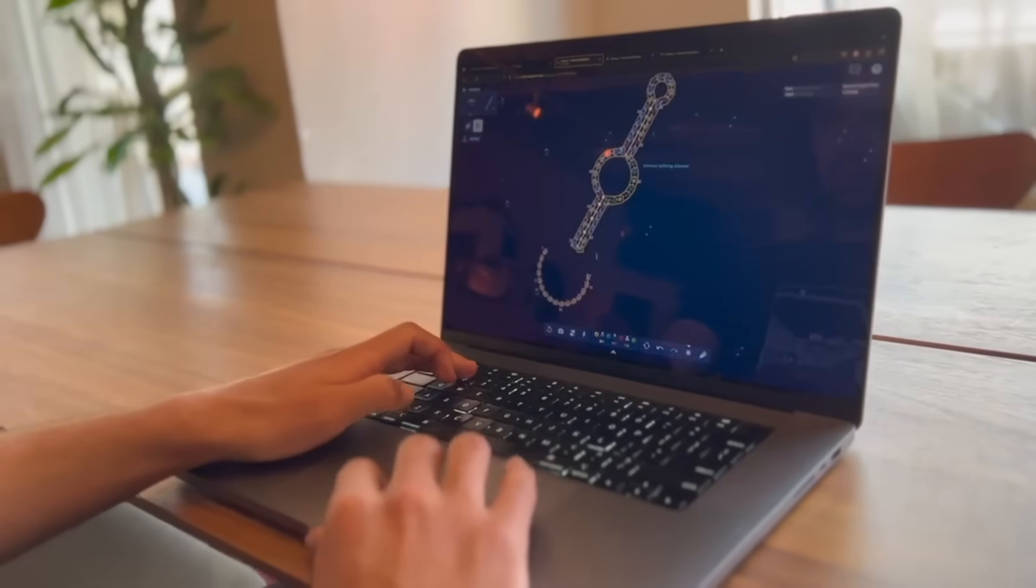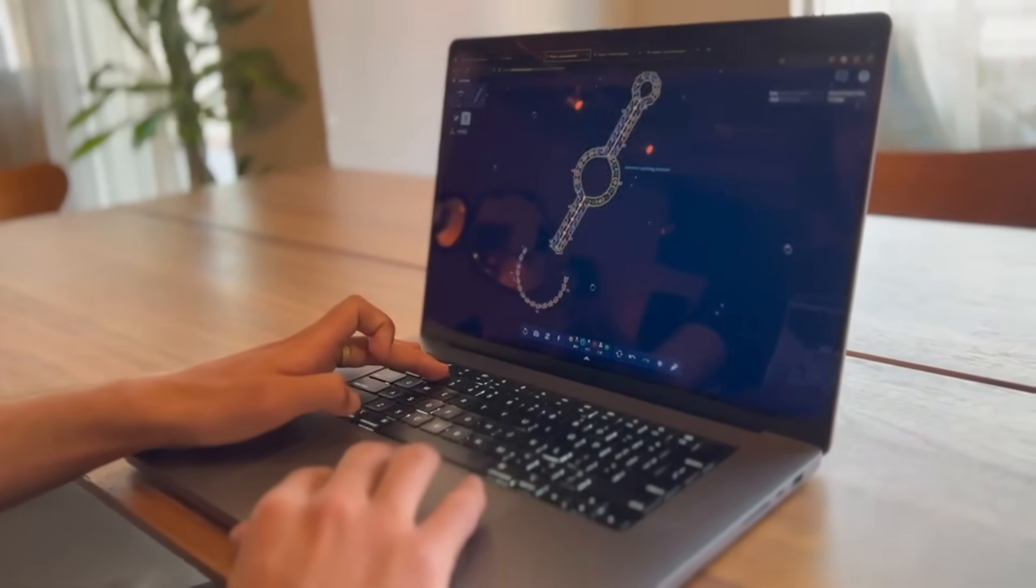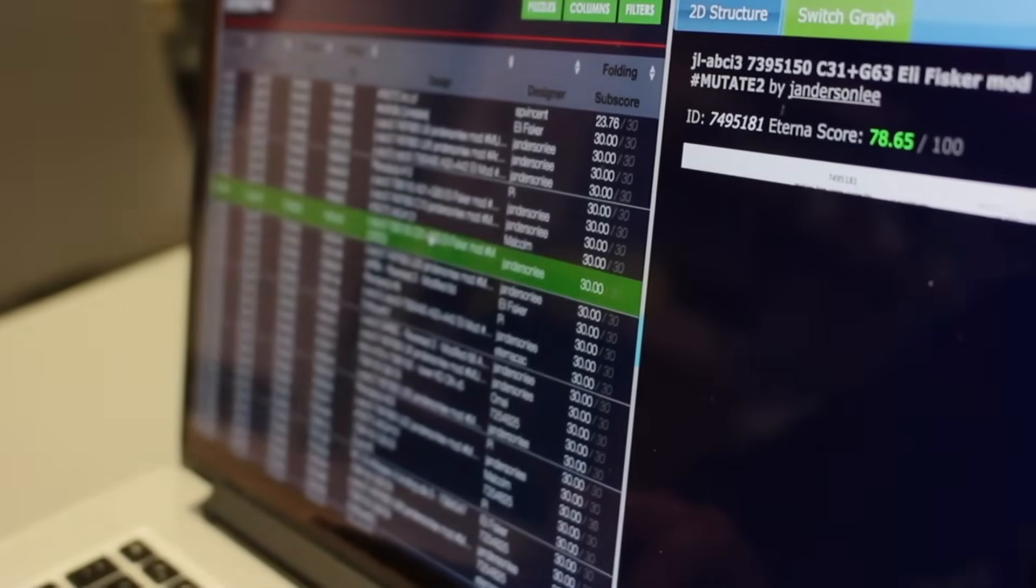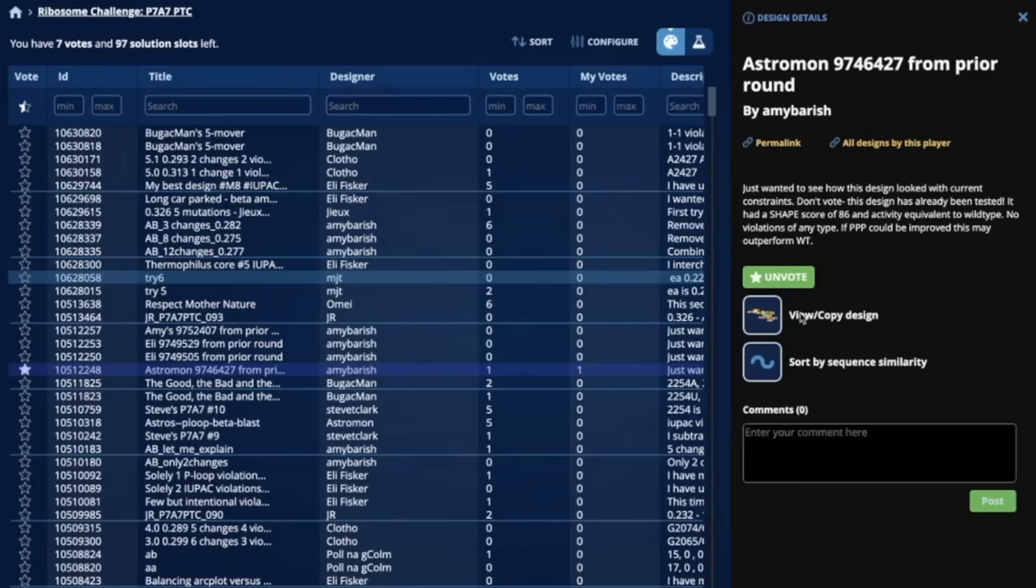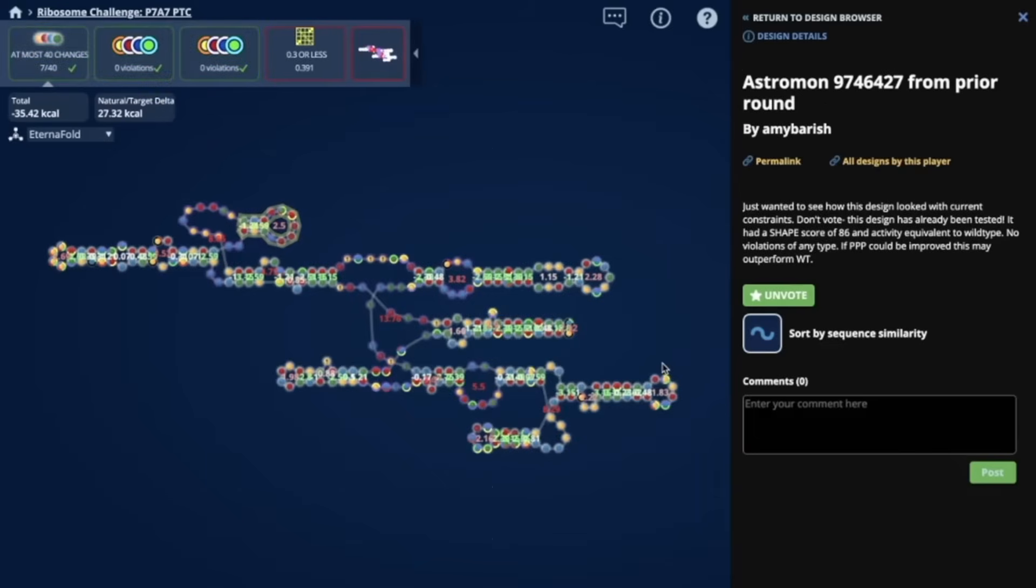Eterna has crowdsourced problems that are intractable for expert scientists and our supercomputers to citizen scientists on the internet who play this interactive video game and actually provide RNA sequences that they think might fold up into structures or have functions that we need.